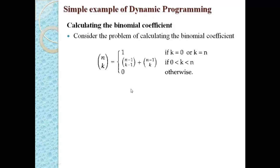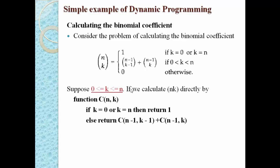Otherwise we return 0. This recurrence equation is used for calculating the binomial coefficient. When we convert it into an algorithm, we write function C(n, k): if k = 0 or k = n, return 1; otherwise return C(n−1, k−1) + C(n−1, k). The function calls itself recursively for different values of n and k, and at the end we have the solution of the binomial coefficient.